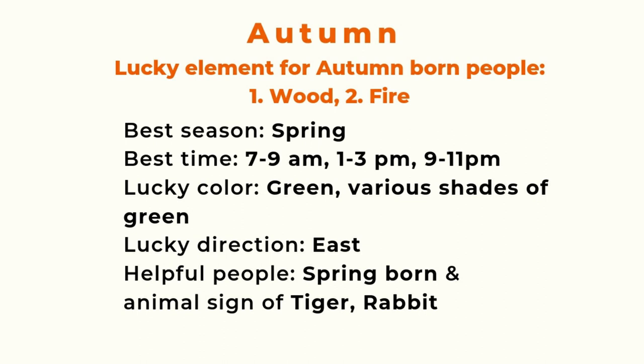The best direction for autumn people is east, because east is related to the wood element. One way to increase your luck is to eat a lot of vegetables, fruits, or plant-based food, and surround yourself with books, since books belong to the wood element too. Helpful people are those born in spring, or the animal signs of tiger and rabbit.